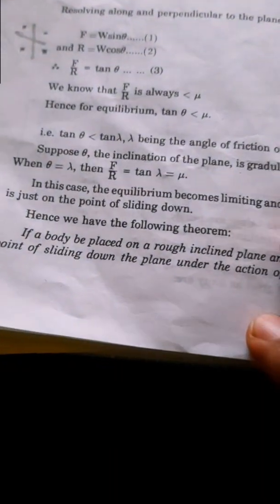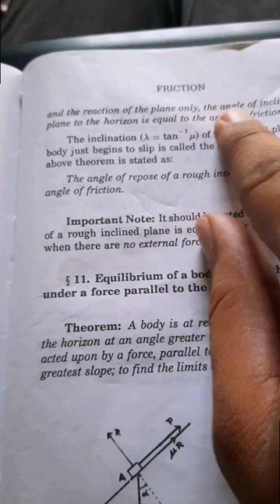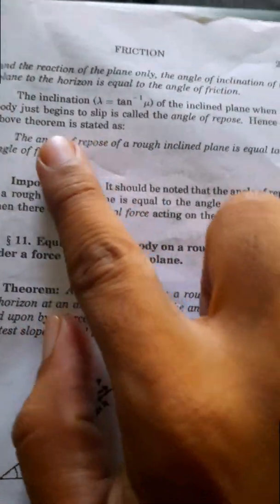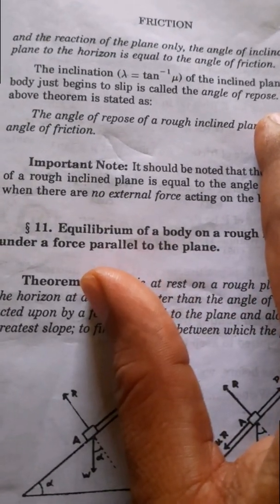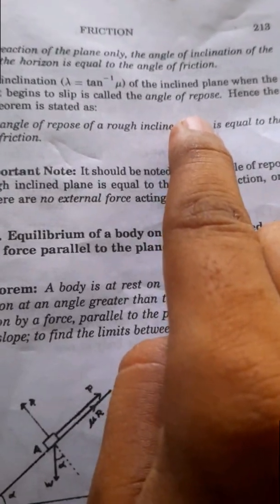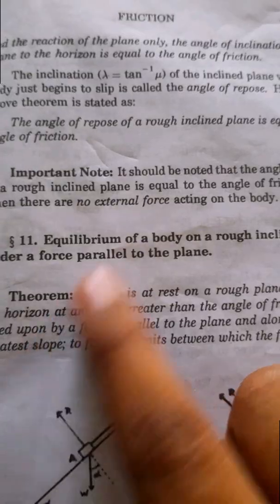Hence, we have the following theorem: if a body is placed on a rough inclined plane and is on the point of sliding down under the action of its weight and the reaction of the plane only, then the angle of inclination of the plane to the horizontal equals the angle of friction. The inclination of the inclined plane when the body begins to slip is called the angle of repose, which equals the angle of friction.